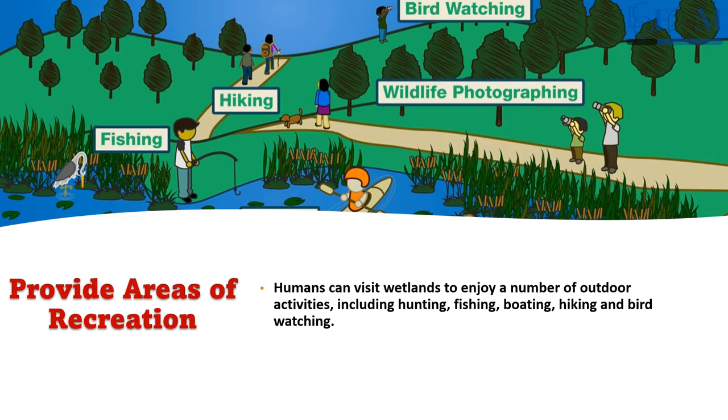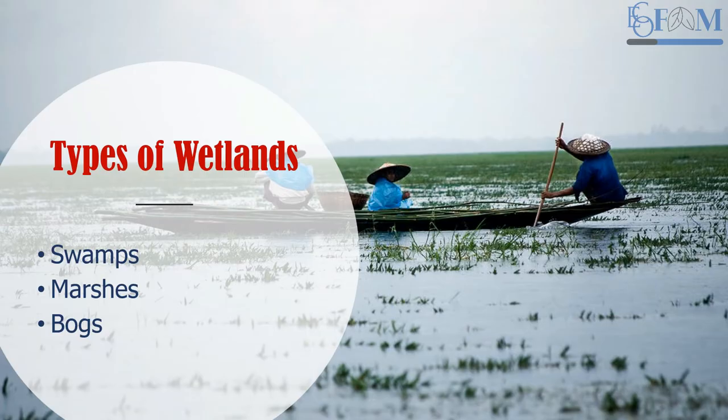Moving to the types of wetlands, wetlands have been broadly classified into three types: swamps, marshes, and bogs.